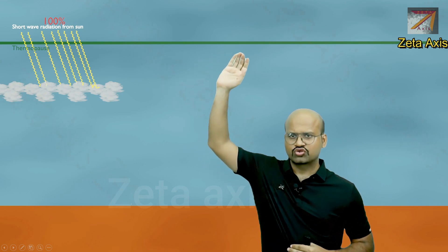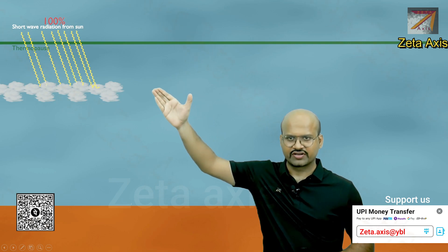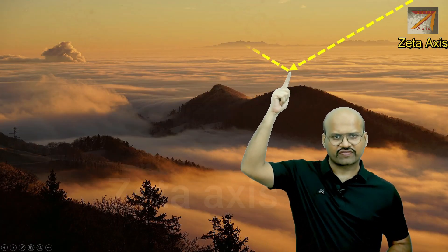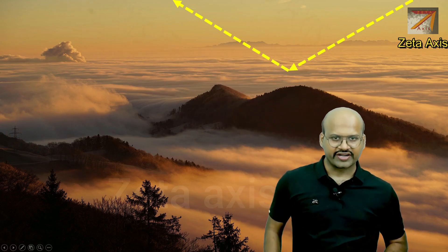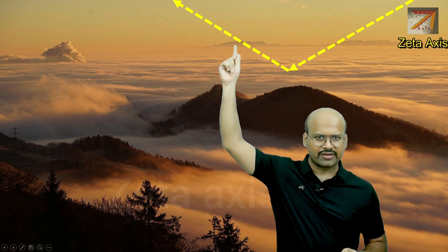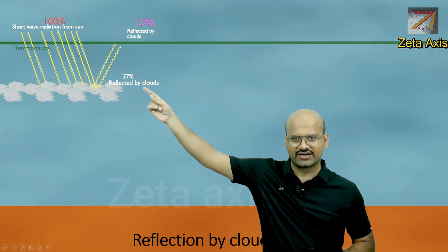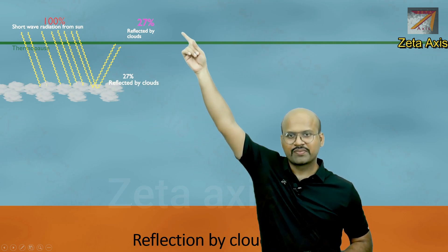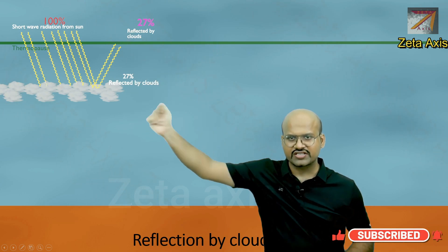Solar radiation arrives as shortwave radiation. When it crosses the thermopause and enters the atmosphere, it first encounters clouds. Clouds act as a barrier — a large part of the incoming light is reflected back to space and never reaches Earth's surface. As we can see in the figure, 27% of the total solar radiation received by Earth is reflected by clouds back to space.